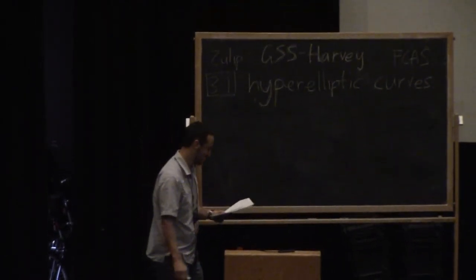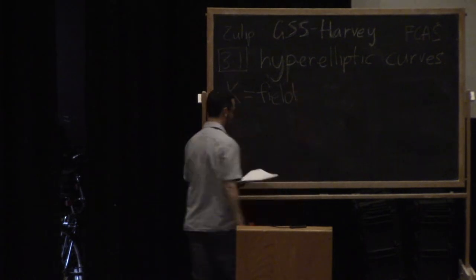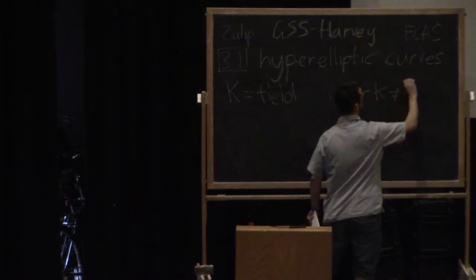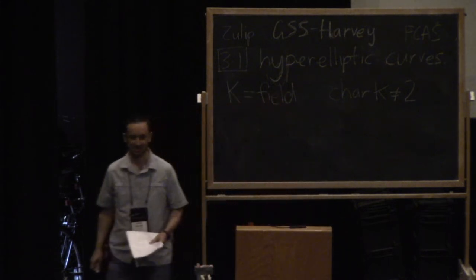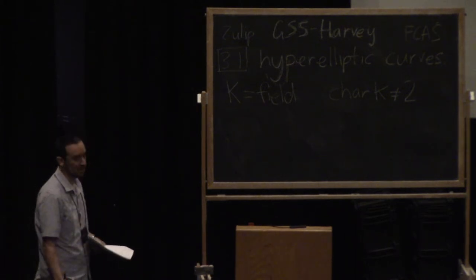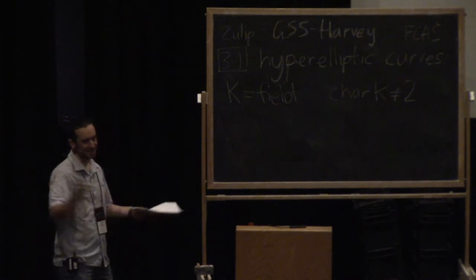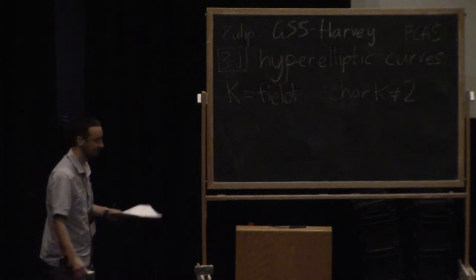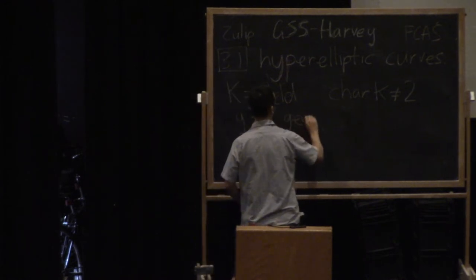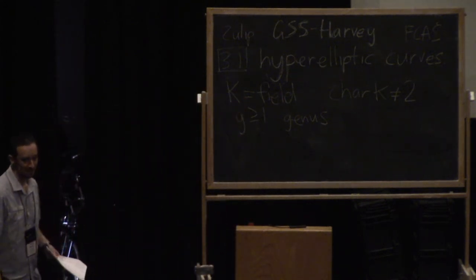Hyperelliptic curves. So we're going to be working over a field K, and for our sanity we're going to assume the characteristic is not 2. You can do everything in characteristic 2 but let's just not go there. For most of the course K will be a finite field, but I will also need to worry about the case where K is the rational numbers in section 7 — hopefully we get to section 7. I'm going to write g for the genus, which is going to be an integer at least 1. Some of you are probably already worried about g equals 1 — I'll come back to that in a few moments.